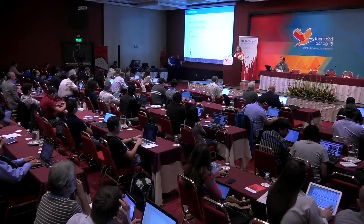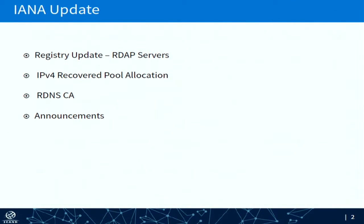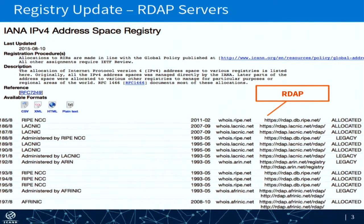This is sort of an announcement so that you'll all be prepared. As Carlos mentioned earlier, RDAP is a replacement for WHOIS, and it actually is going to be running in parallel with WHOIS for quite a long time. One of the things that was in the RFC was the IANA considerations — that we were to make sure that we bootstrapped the RDAP process. That meant that we made a new column in the registry where the RIRs could publish their link to their RDAP services.